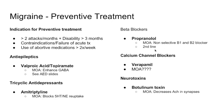Propranolol can be helpful in patients who have hypertension. For example, if a patient has high blood pressure and migraines, that would be a perfect medication to put them on. Calcium channel blockers — specifically verapamil — can also be used.